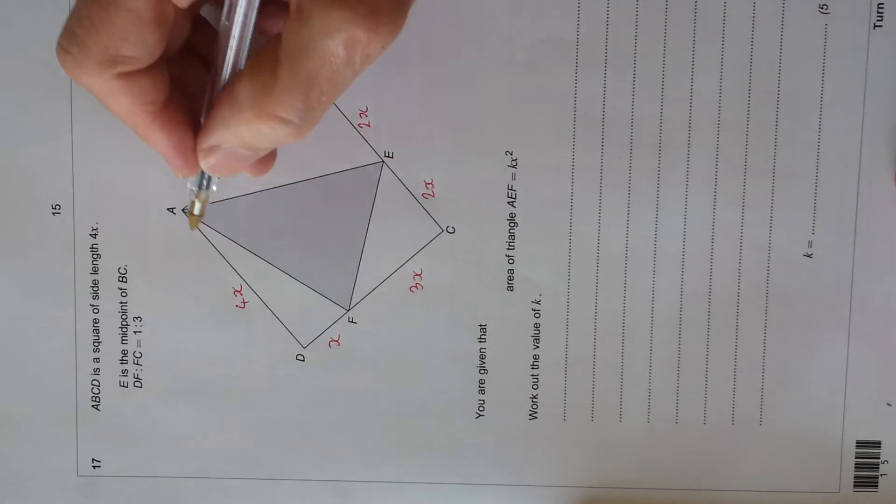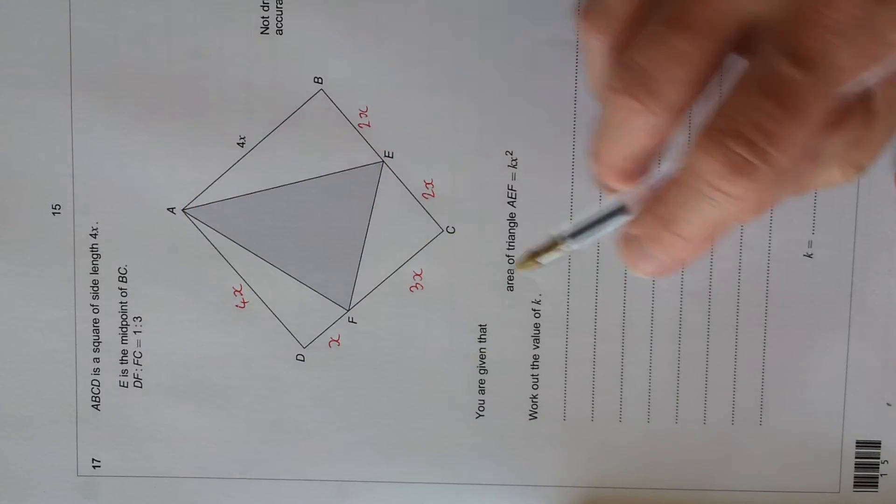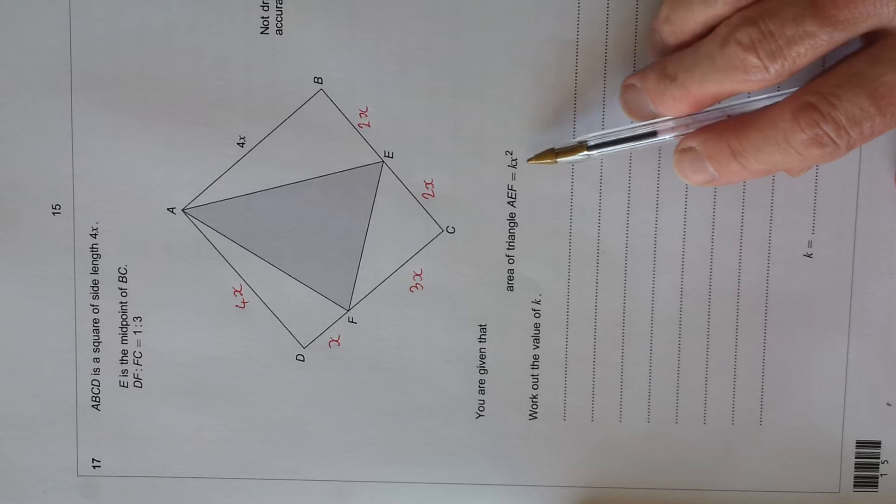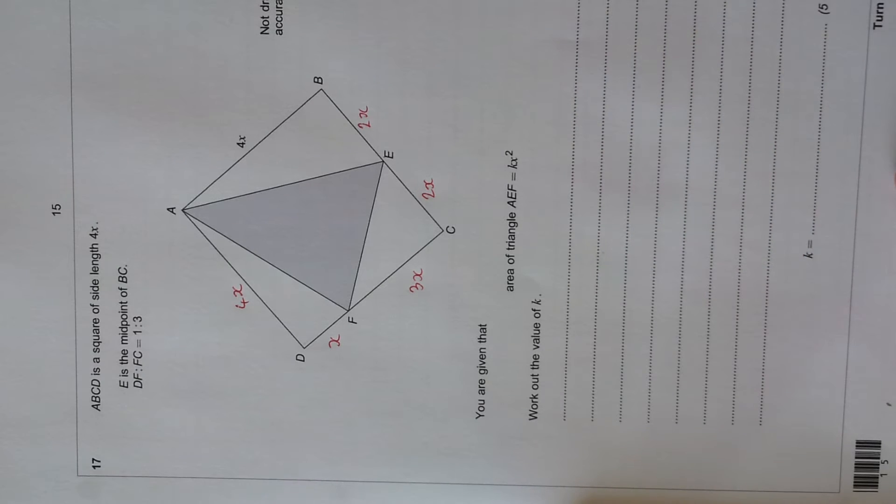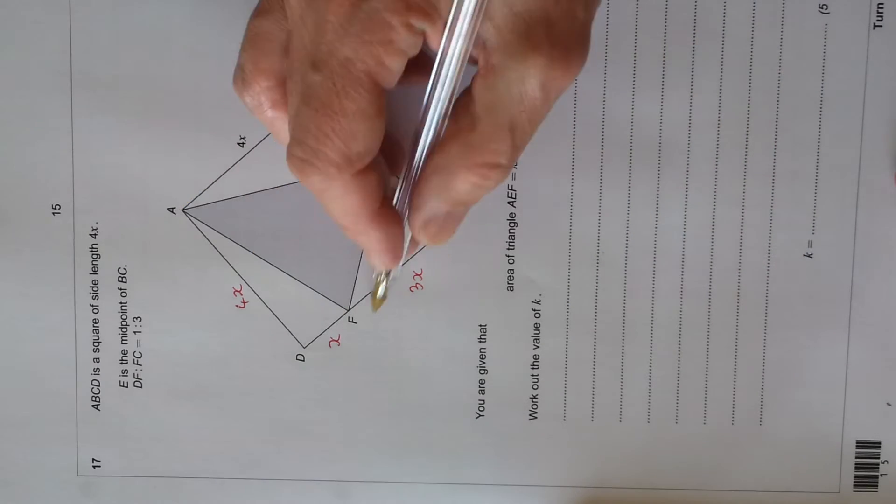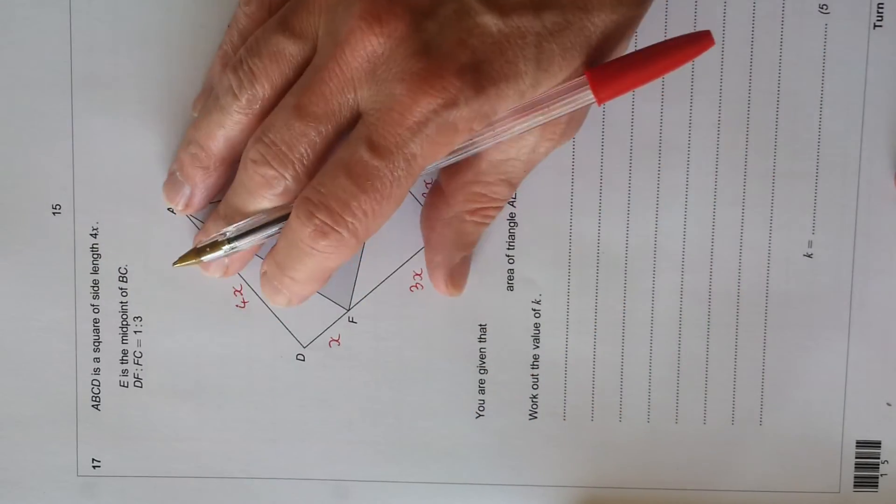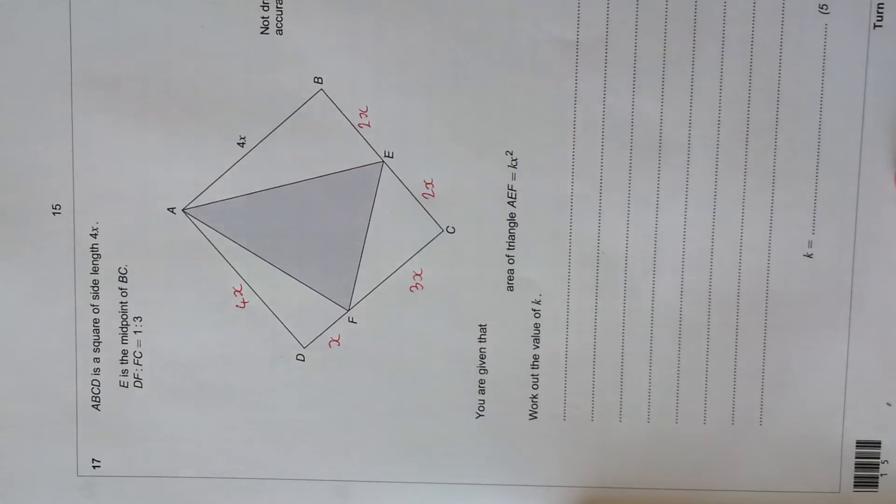OK, to find the shaded area, it says you are given that the area of the triangle AAF equals kx squared, find the value of k. So AAF is the shaded part here. So all we need to do is find the whole area of the whole square and subtract the three triangles, and that will give the shaded part.